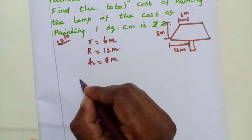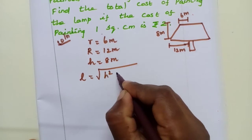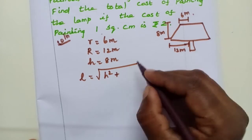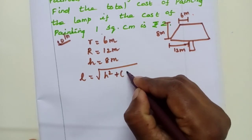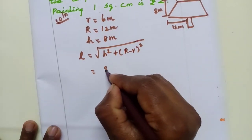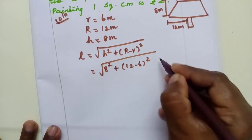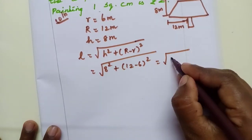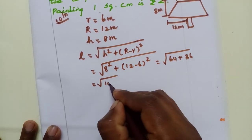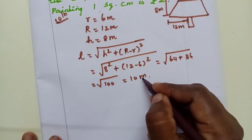Now we have to find L. L is equal to square root of h square plus R minus r the whole square. So we have 8 square plus 12 minus 6 the whole square. Equal to square root of 64 plus 36. Square root of 100 that is equal to 10 meters. So L value is 10 meters.